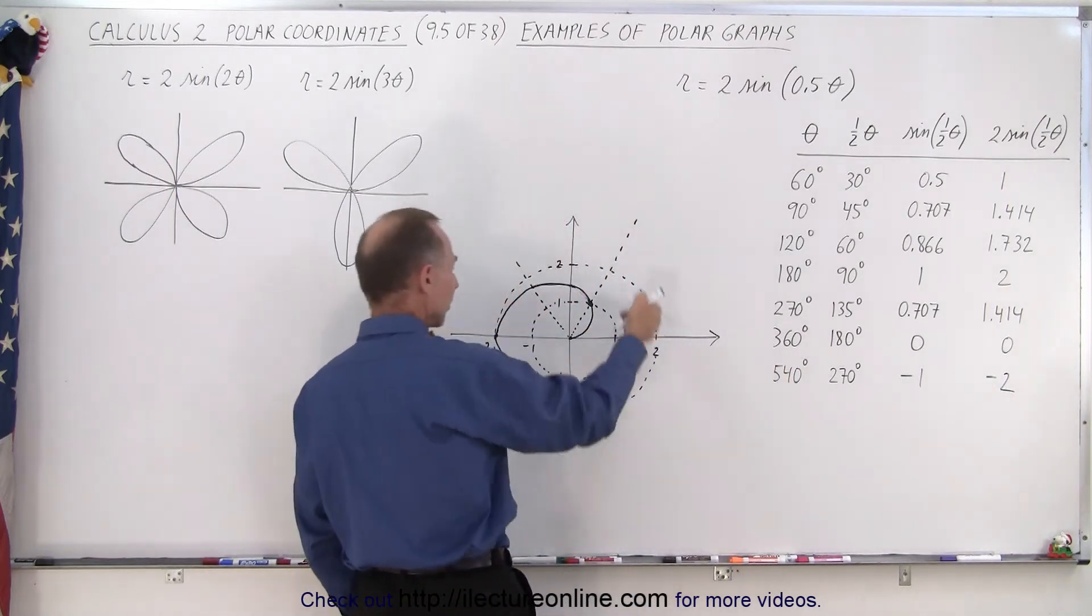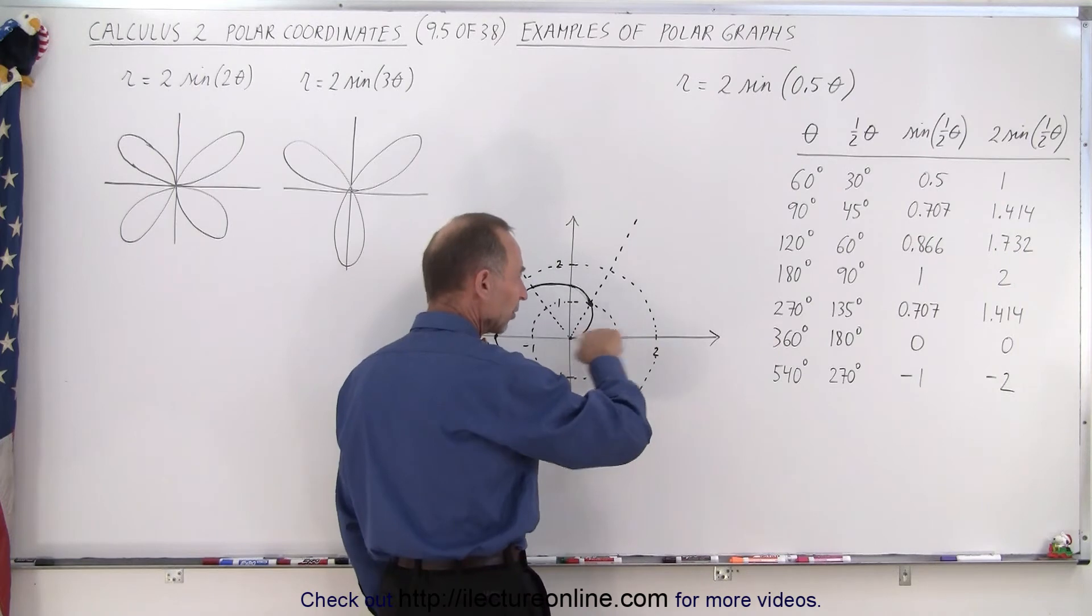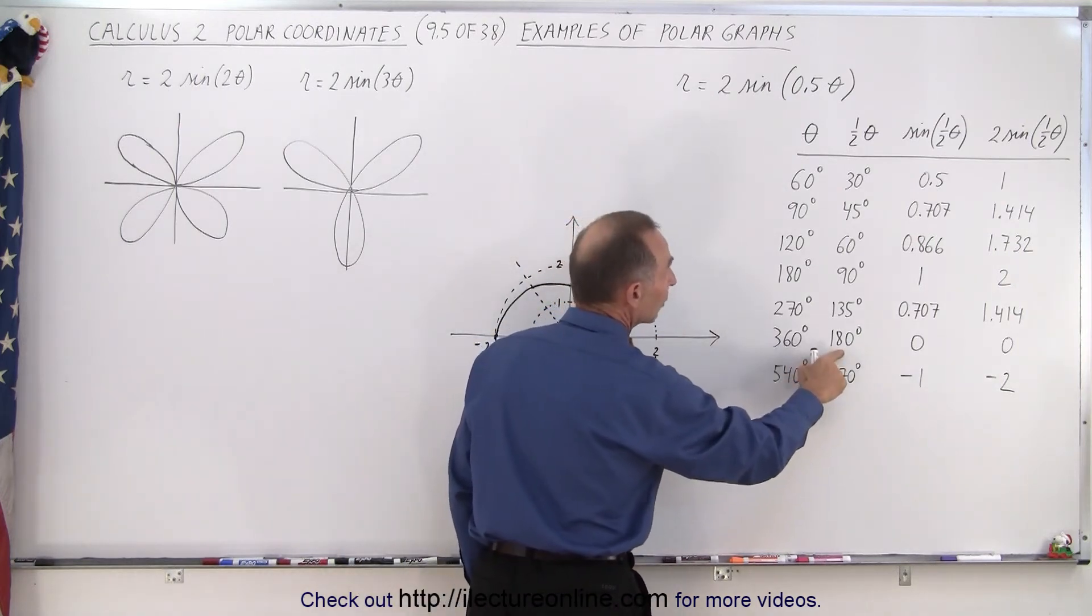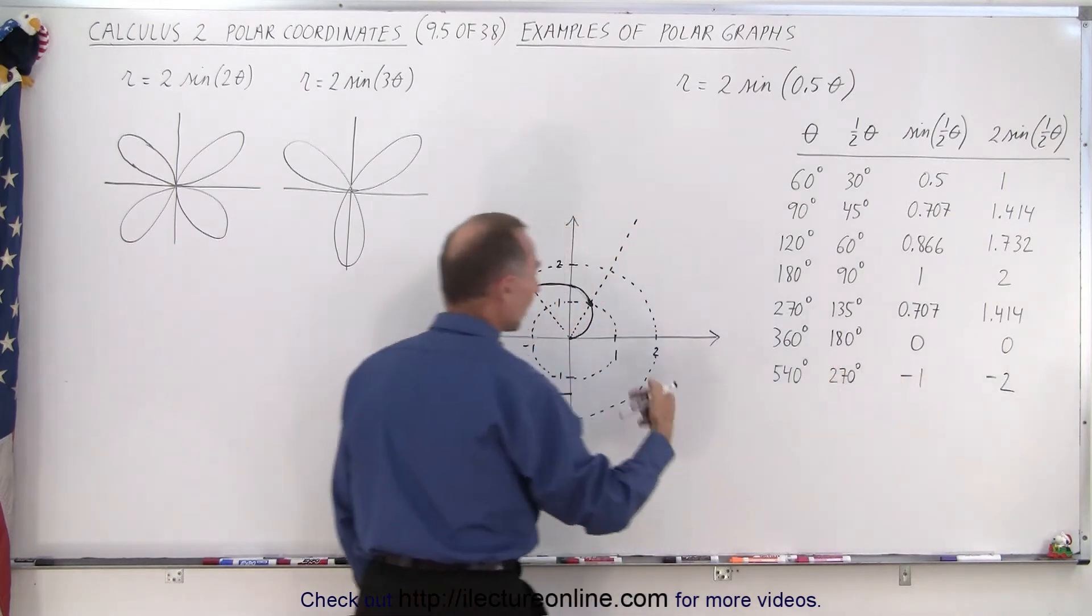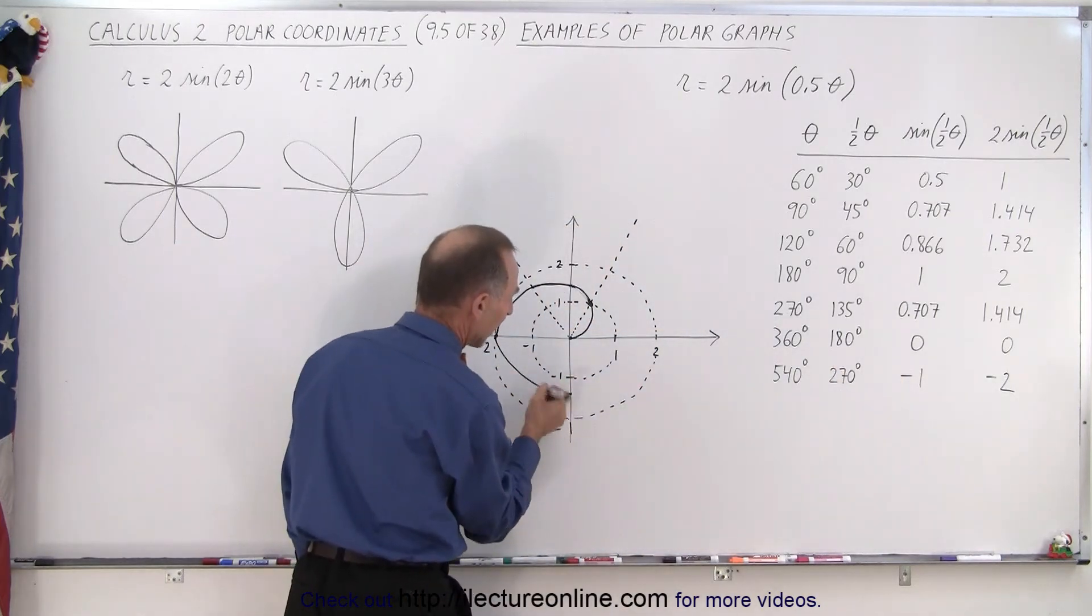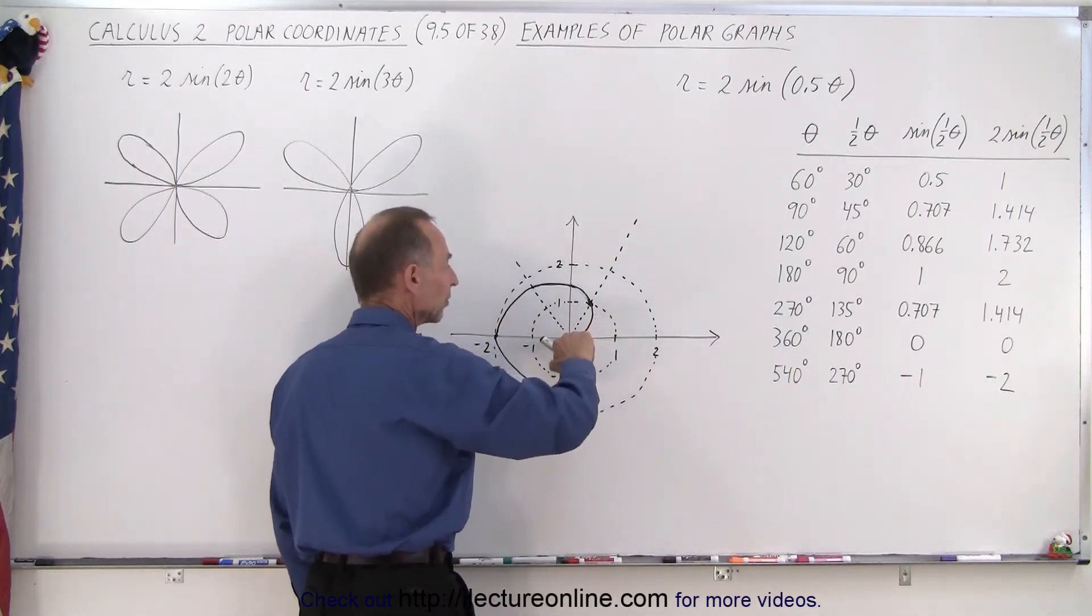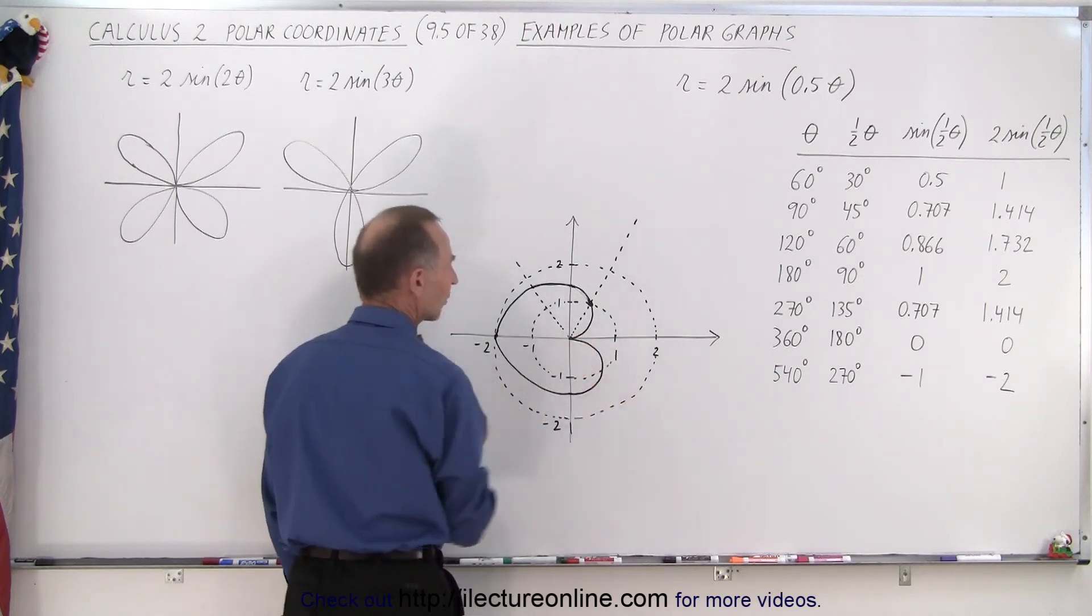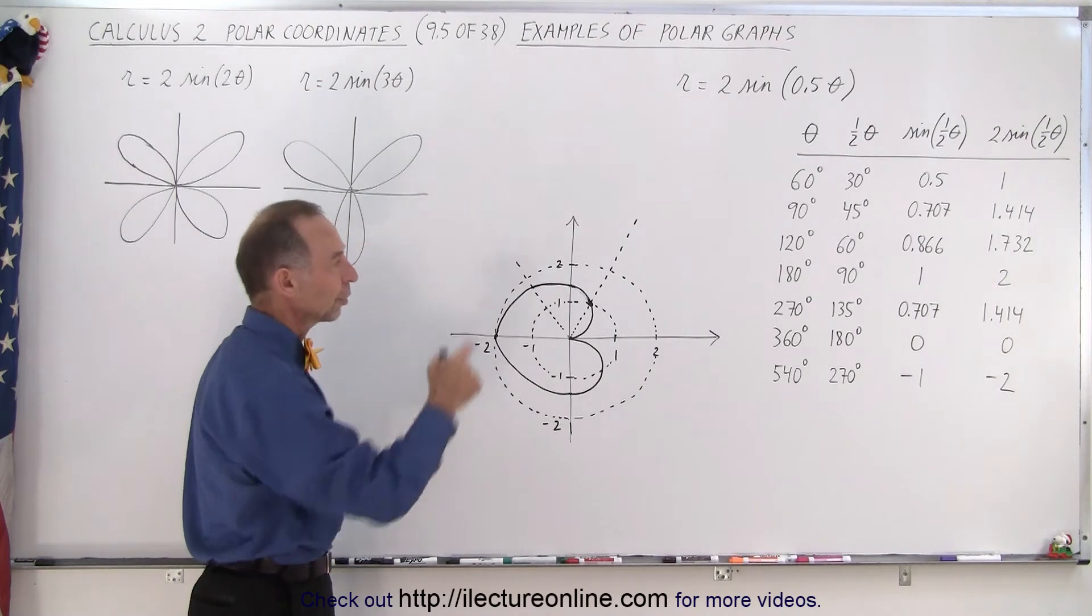Now we go to 360 degrees. This is one complete circle pointing in this direction. Half of that is 180 degrees. The sine of 180 is 0, so the magnitude then would be 0. By the time we get back to this, you're back at 0. Then you can see that this is probably going to look like that. So that's all the way up to 360.